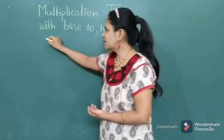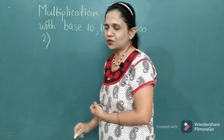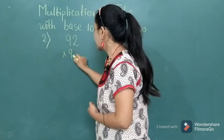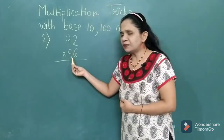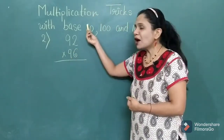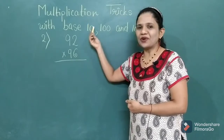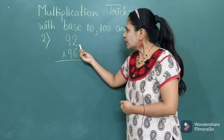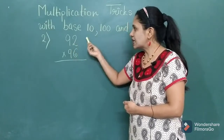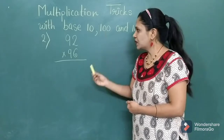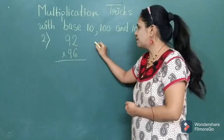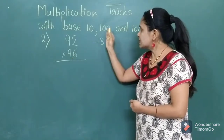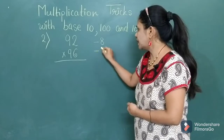Let's take the second example with 2-digit numbers. Suppose you want to multiply 92 by 96. We don't know the table of 96, so how will you apply today's trick to find the answer very quickly? Now what is the base number for 92 and 96? That is 100. Now 92 is less than 100 by 8, and 96 is less than 100 by 4.